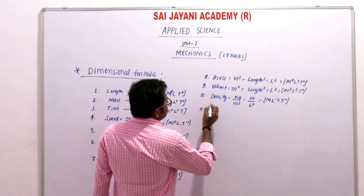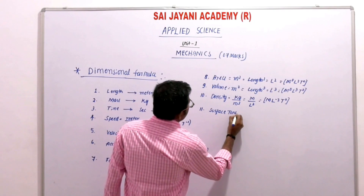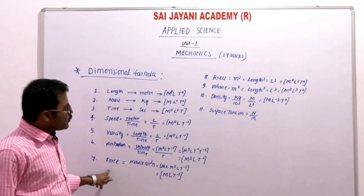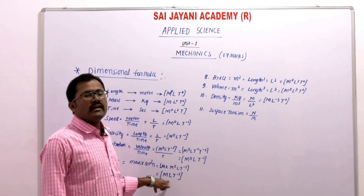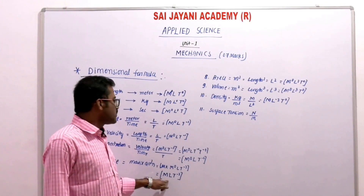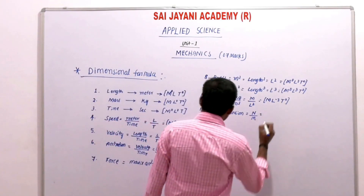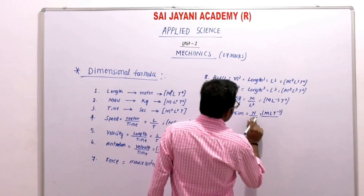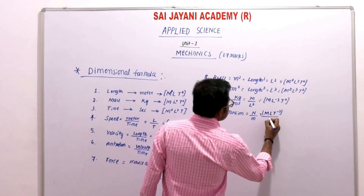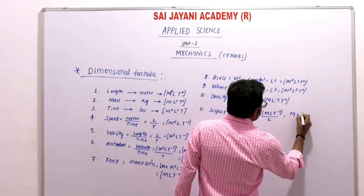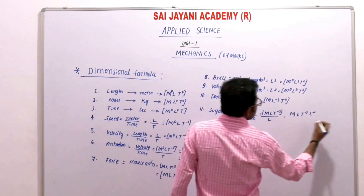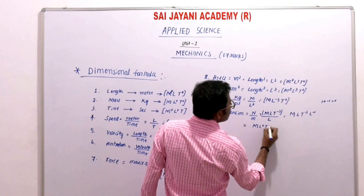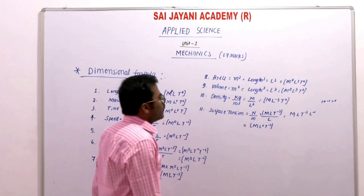Next is surface tension. The SI unit of surface tension is newton per meter. Newton is the unit of force, and force has dimensional formula M L T⁻². Dividing by meter (length L) gives M L T⁻² divided by L, which means L to the power 1 minus 1 equals L⁰. So the dimensional formula for surface tension is M L⁰ T⁻².